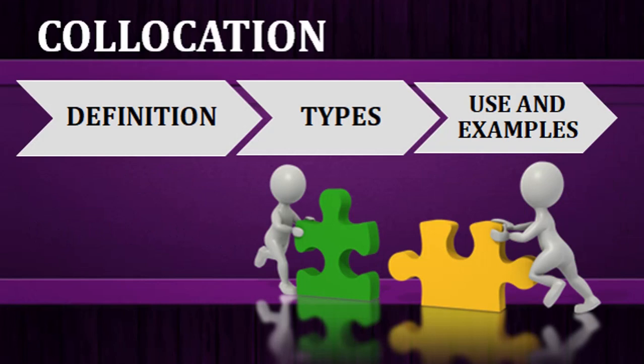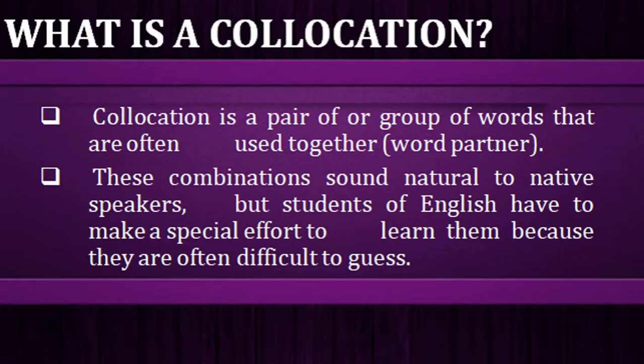Starting with the explanation of collocation — what it is, its types, uses, and examples. In simple terms, collocation is also called 'word partners.' Collocated words are pairs or groups of words that we mostly use together. For example, the adjective 'fast' always collocates with 'food' — we say 'fast food,' not 'fast meal.' This is collocation. A key feature of collocation is that it sounds very natural to native speakers.